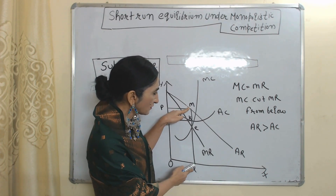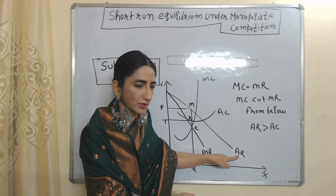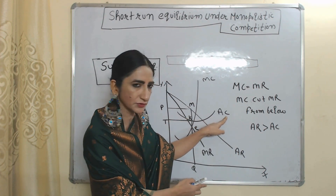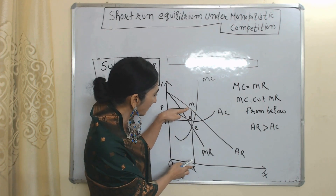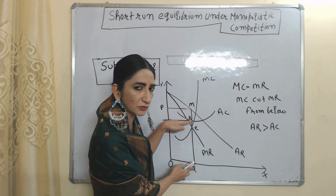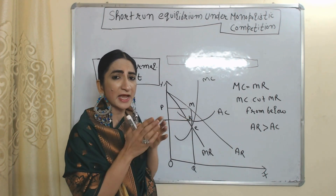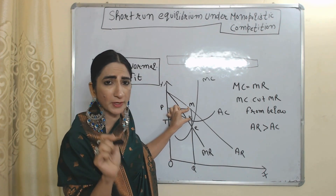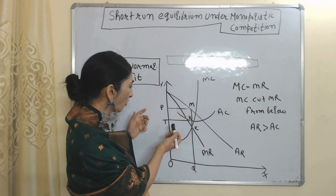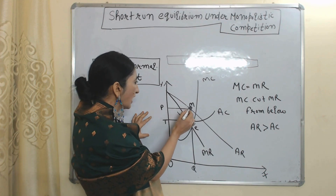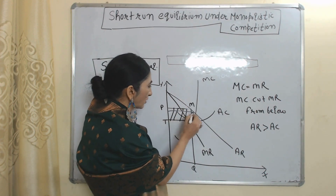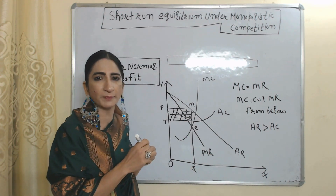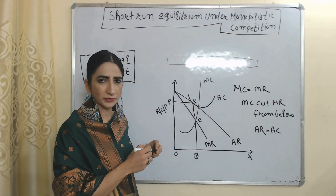MQ is our average revenue because point M touches the average revenue curve. KQ is our average cost because point K touches the average cost curve. MQ is more than KQ, meaning average revenue is more than average cost. The difference between average revenue and average cost, MK, is called per unit super normal profit. The whole area TPMK is called total super normal profit. So we can say OQ amount of output is giving us super normal profit.